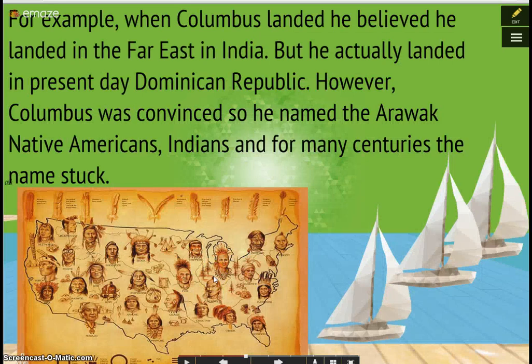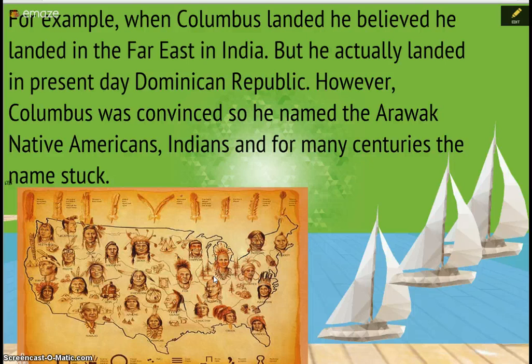When Columbus landed, he believed he was in the Far East — India — but he had actually landed in present-day Dominican Republic. Nevertheless, Columbus named the Arawak Native Americans 'Indians,' and for many centuries the name stuck. You can see on the map several Native American tribes throughout what is now the continental United States — those tribes have been referred to as Indian tribes for a long time. The appropriate term is Native Americans.